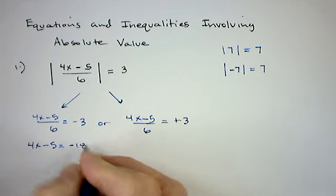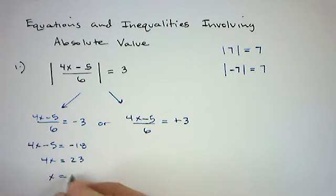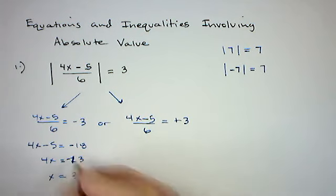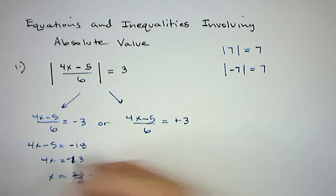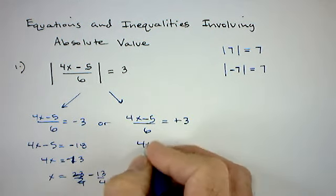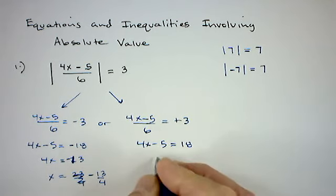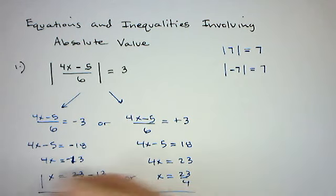Solving the first equation: multiplying by 6 gives 4x − 5 = −18, then adding 5 gives 4x = −13, so x = −13/4. For the second equation: multiplying by 6 gives 4x − 5 = 18, then adding 5 gives 4x = 23, so x = 23/4. Our two answers are x = −13/4 or x = 23/4.